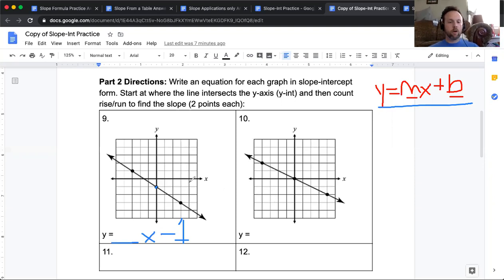So starting at my y, my y intercept, I can go either way. But I'm going to look for the next point that intersects somewhere nicely. So I've got this one right here at point, what's that, 4, negative 3. So in order to get from, I'll name this point A to point B, I have to go, I'm going to change the colors here.